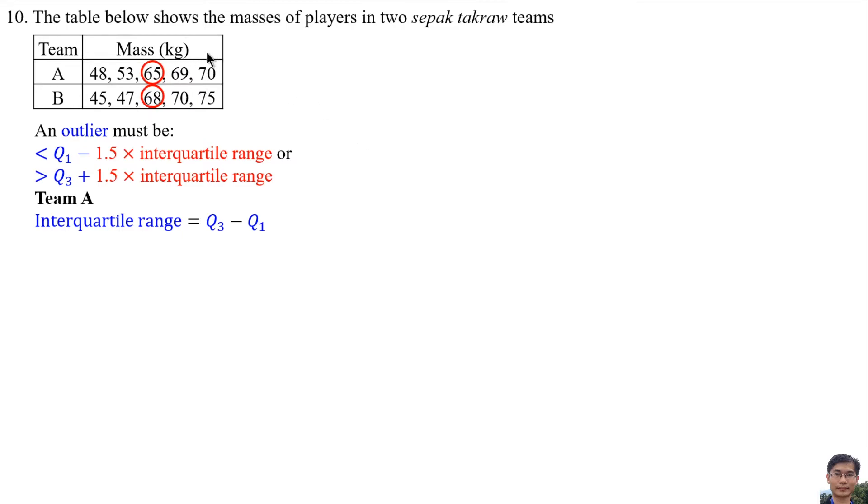After the median, there are two data. The middle of the two data is the third quartile. Before the median, there are two data. The middle of the two data is the first quartile. So the third quartile for Team A is the average of 69 and 70, and the first quartile is the average of 48 and 53. So the interquartile range for Team A is 69.5 minus 50.5, which equals 19.